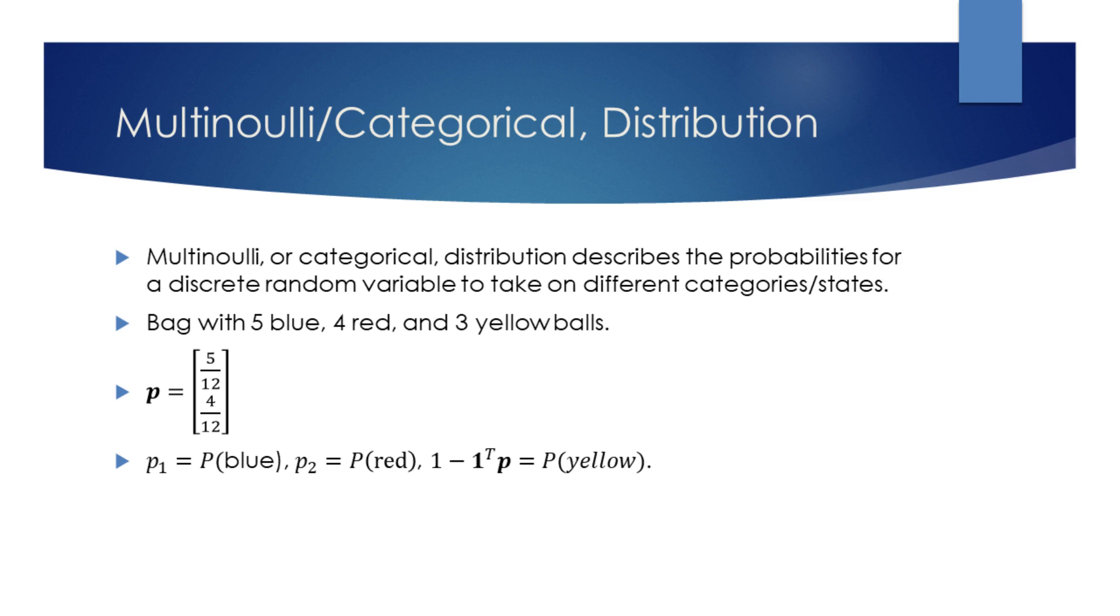We know that the sum of the probabilities of a discrete random variable must be equal to 1. Hence, the probability of the drawn ball to be yellow will be given by 1 minus the sum of elements in the vector.